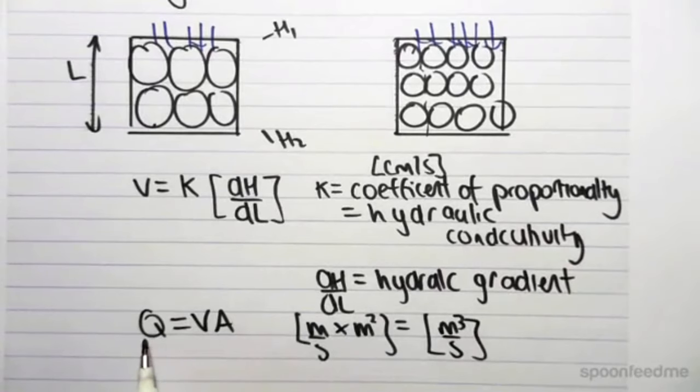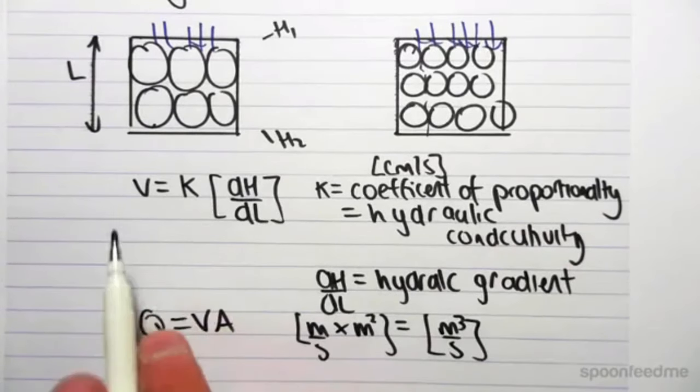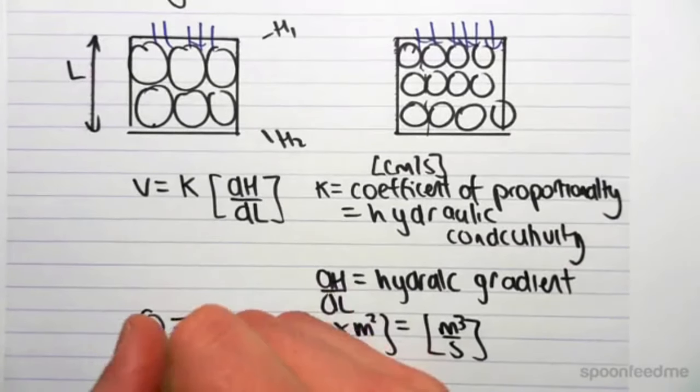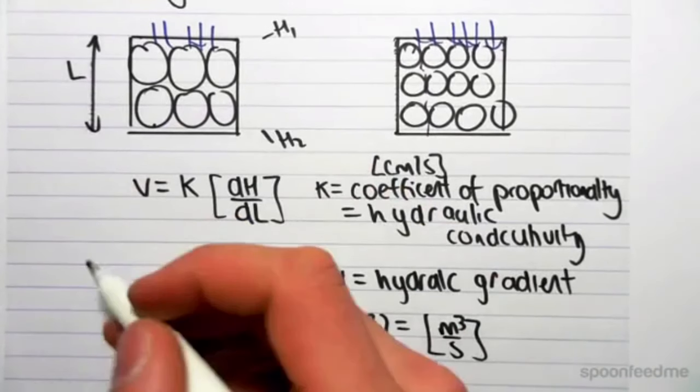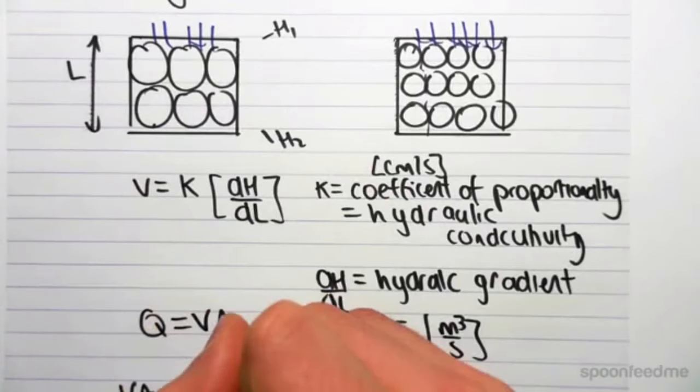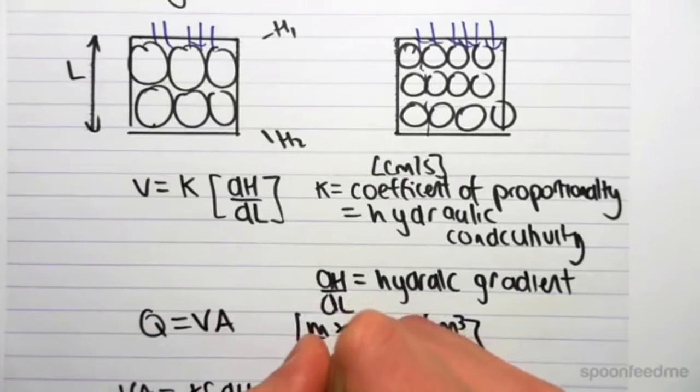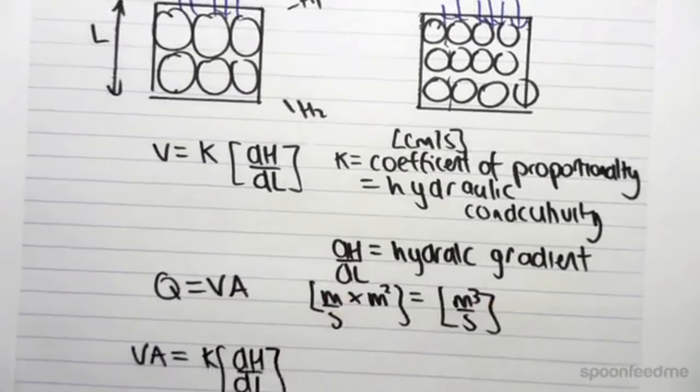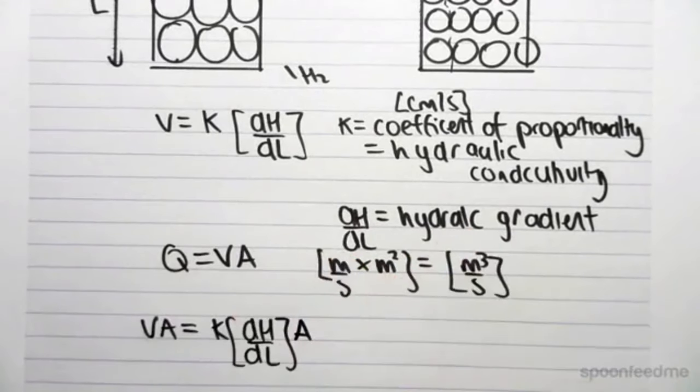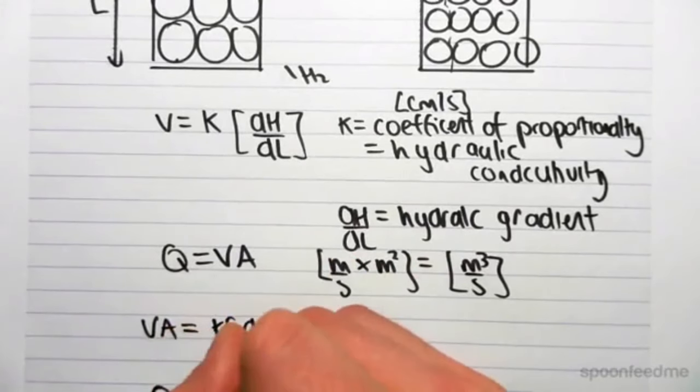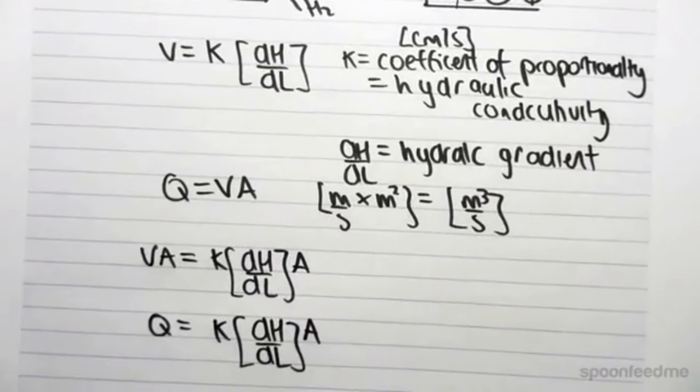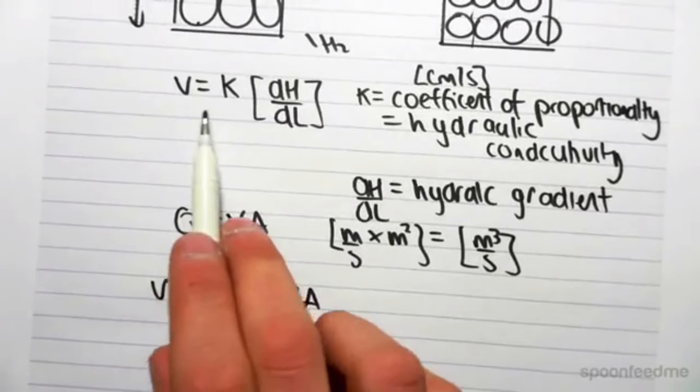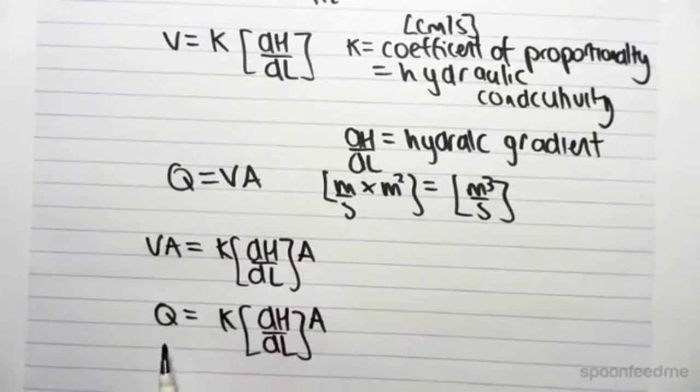The flow rate equals VA, so we can also put Darcy's law in terms of flow rate. We can multiply both sides by A, so we have VA equals K times DH over DL times A, which means Q equals K times DH over DL times A. So we can have Darcy's law in terms of velocity and in terms of flow rate.